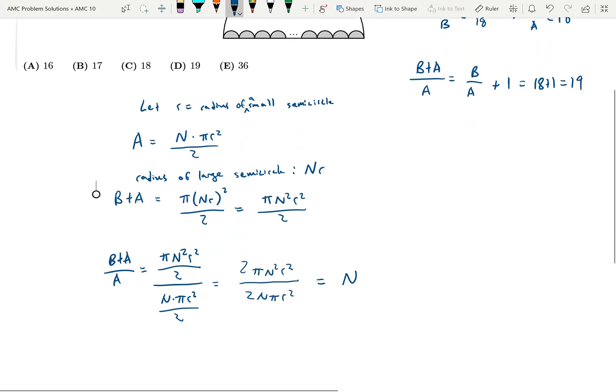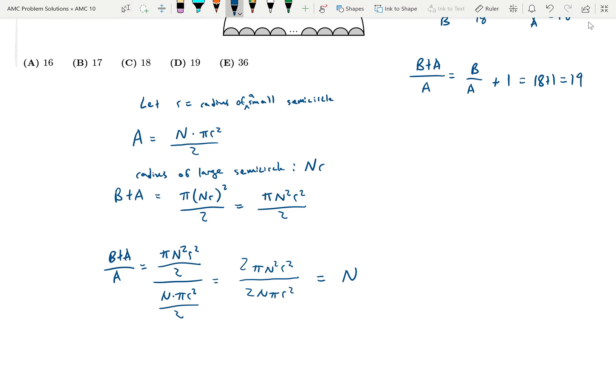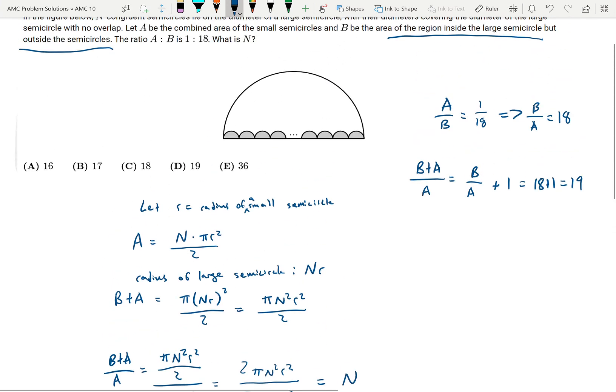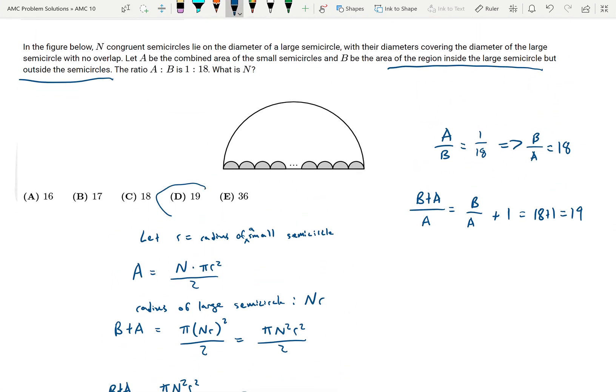So it's true that N is equal to B plus A over A and that also equals 19. So therefore I found that N equals 19 and that is choice D.